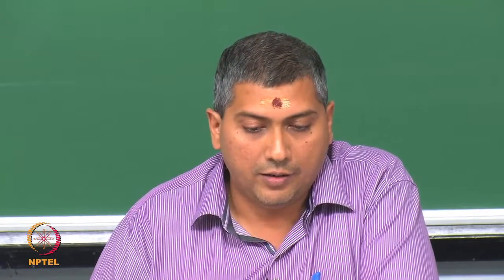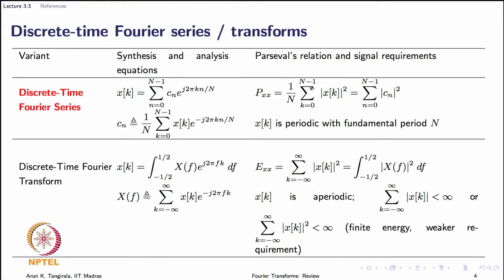This is the Fourier analysis equation, giving the expression for the Fourier coefficient. On the right hand side is the power spectral decomposition result due to Percival, which tells how power is decomposed in the frequency domain. Here mod c_n squared quantifies the contribution of the nth harmonic — the discrete time exponential — to the overall power of the signal. The bottom row shows the discrete time Fourier transform, which is the subject of the next module.